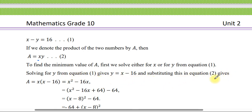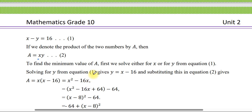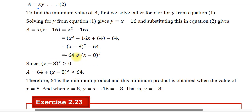Substitute Y = X minus 16 into A = XY. We get A = X(X minus 16) = X squared minus 16X. Completing the square: A = X squared minus 16X + 64 minus 64 = (X minus 8) squared minus 64.